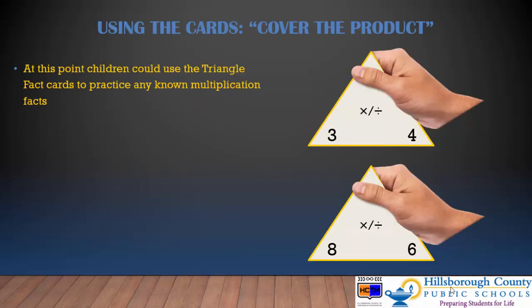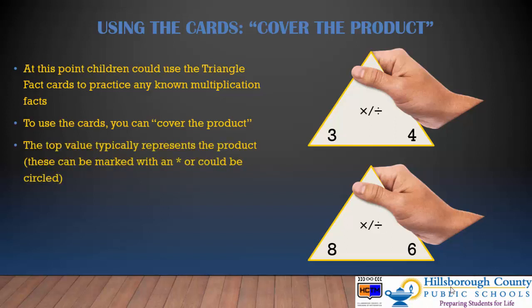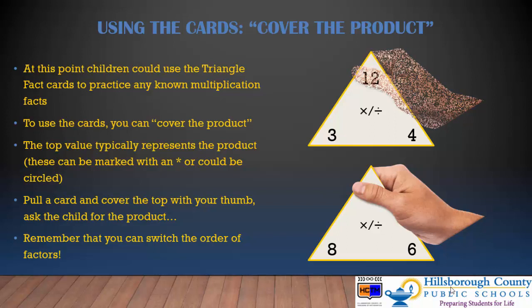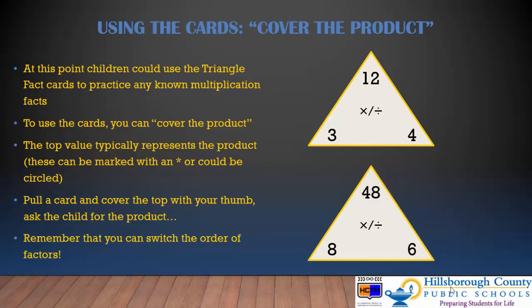At this point, children could use the triangle fact cards to practice any known multiplication facts. To use the cards, you simply cover the product. The top value typically represents the product — it could be marked with an asterisk, a dot, it could be circled, it could be a different color. Pull one of your triangle cards and cover the top with your thumb and ask the child for the product. What is 3 times 4? Remember that you or the child can switch the order of the factors because the product will remain the same. Maybe I know 4 times 3 but I don't know 3 times 4 — either way, I know the product is going to be 12. Or on the bottom, realizing 8 times 6 and 6 times 8 both give me the same product of 48.